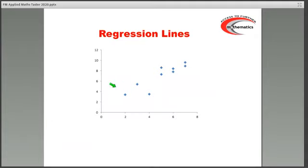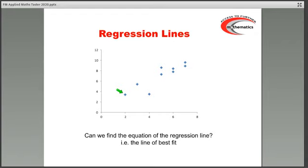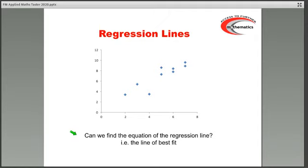We have here some data, which is paired data, and each of these points represents a pair of values. So we basically have a scatter diagram. And the question is, can we find the equation of what is called the regression line? Now, at GCSE, you would have found a line of best fit. You would have had a scatter diagram and, by eye, drawn a line of best fit through these points. What we will be looking at in the A-level further statistics is finding a line which is called the regression line, which is the best line of best fit, if you like.